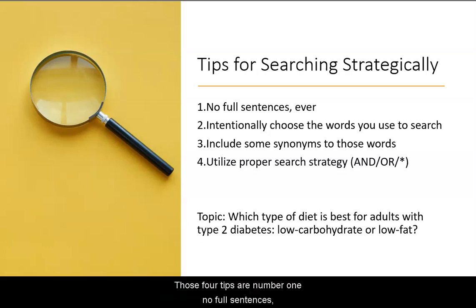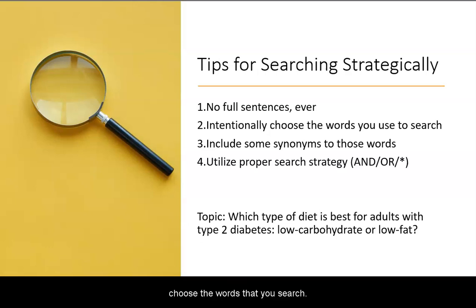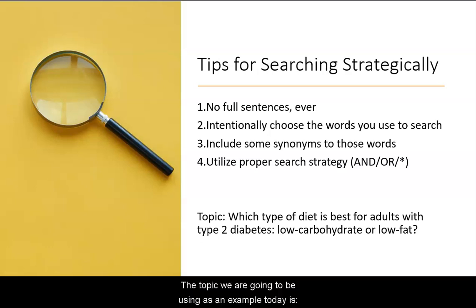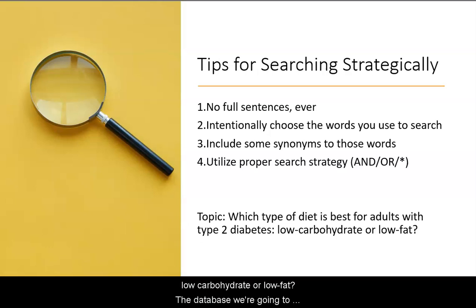Those four tips are: number one, no full sentences ever; number two, intentionally choose the words that you search; number three, include some synonyms to those words; and four, utilize proper search strategy — that is, using AND, OR, NOT, asterisk, quotation marks, etc. The topic we're going to be using as an example today is: which type of diet is best for adults with type 2 diabetes — low carbohydrate or low fat?